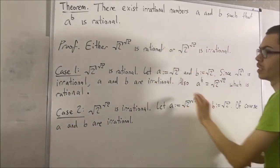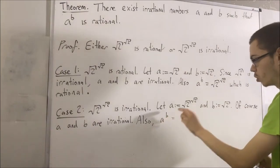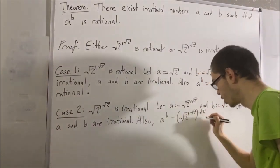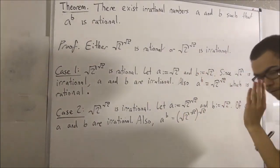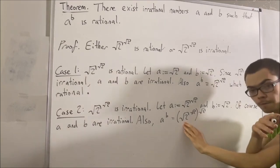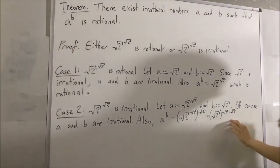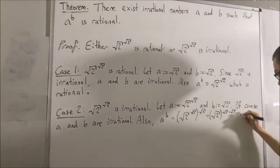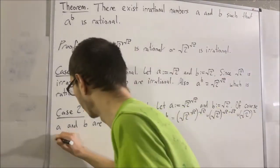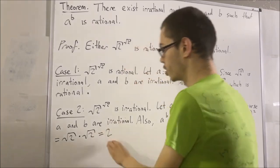Now we want to show that a to the power of b is rational. Now, a to the power of b is equal to square root of 2 to the power of square root of 2, raised to the power of square root of 2. If we substitute that in, and recall from properties of exponents, this is equivalent to square root of 2 to the power of square root of 2 times square root of 2. And of course, square root of 2 times square root of 2 is equal to 2. And square root of 2 to the power of 2 is equal to square root of 2 times square root of 2, which equals 2. And 2 is rational.